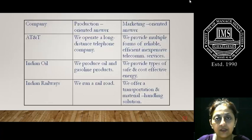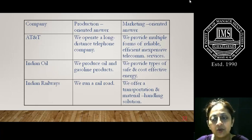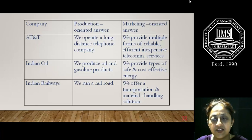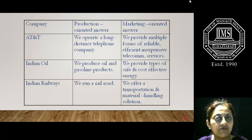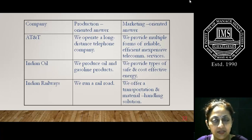Taking a few examples: Indian Railways — a production-oriented answer would be 'we run a railroad,' but a marketing-oriented answer is 'we offer transportation and material handling solutions to the customer's problems.' At AT&T, the marketing-oriented answer is 'we provide multiple forms of reliable, inexpensive, and highly efficient telecommunication services,' whereas the production-oriented answer would be 'we operate a long-distance telephone company.' The core operations remain the same, but the orientations and perspectives of organizations have changed drastically by keeping in view the customers' unfulfilled needs and wants.